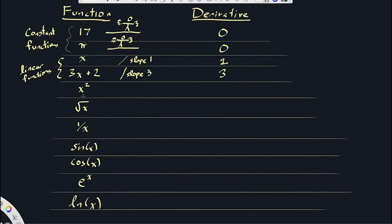Now x squared is maybe the first interesting example. The derivative — we drop the power down and decrease it by 1 — and we're left with 2x. This is a parabola, and 2x describes a line. The fact that this line goes upward reflects that the slope of the parabola starts negative, then is 0, then becomes positive. So the slope of the parabola is described by the line y equals 2x. If f(x) equals x squared, then f'(x), the derivative, is 2x.